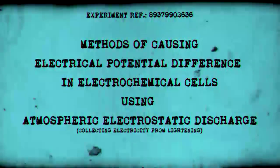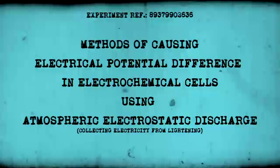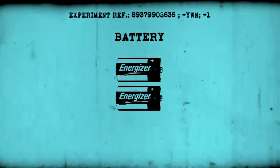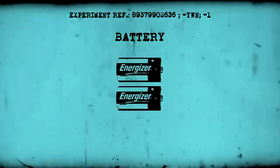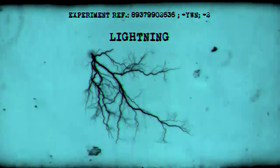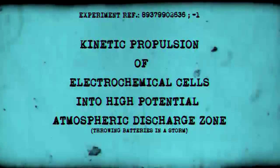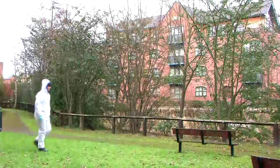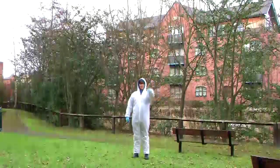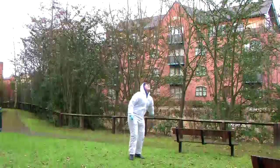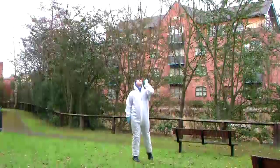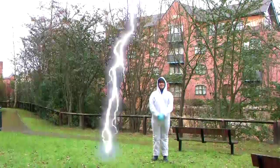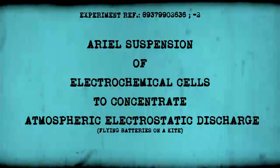Methods of causing electrical potential difference in electrochemical cells using atmospheric electrostatic discharge. Kinetic propulsion of electrochemical cells into a high potential atmospheric discharge zone. Aerial suspension of electrochemical cells to concentrate atmospheric electrostatic discharge.